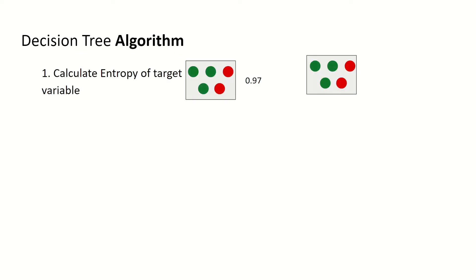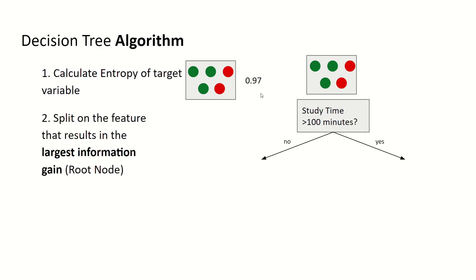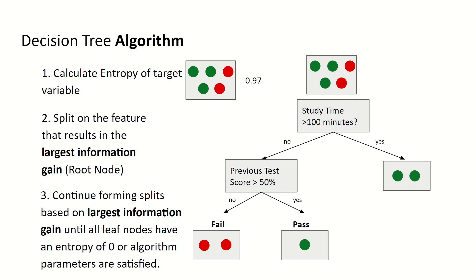So let's now go through the decision tree algorithm. First, we calculate the entropy of the target variable — in our case, whether a student passed or failed a test — and we calculated this entropy to be 0.97. Second, we split on the feature that results in the largest information gain, and this forms the root node. For example, that's if a student has a study time larger than 100 minutes. Third, we continue forming splits based on largest information gain until all leaf nodes have an entropy of 0, or the algorithm's parameters are satisfied. Looking at this decision tree, we see that the entropy of all leaf nodes is 0, since in each leaf node every data point belongs to the same class.